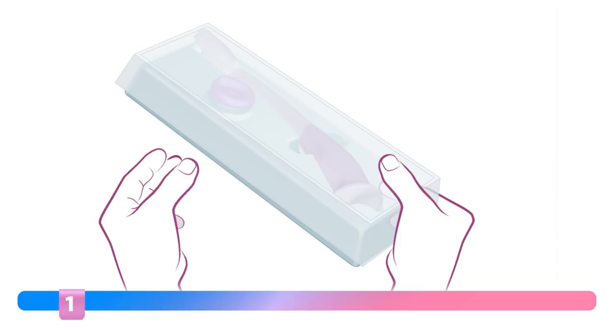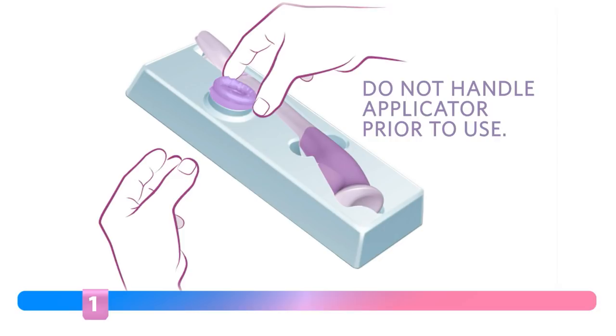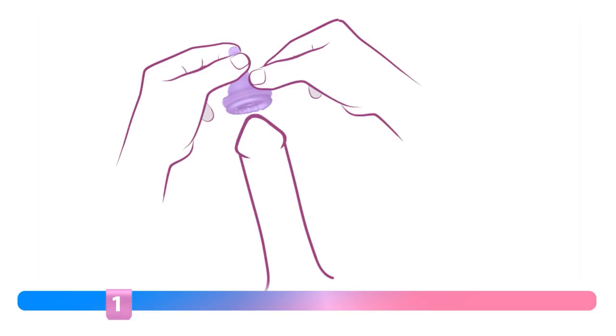Pinch the tip of the conceptacle gently so the majority of air is not trapped inside. Hold the tip while you unroll the conceptacle all the way to the base of the erect penis, just like putting on a standard condom.